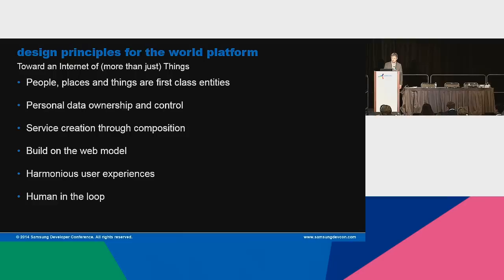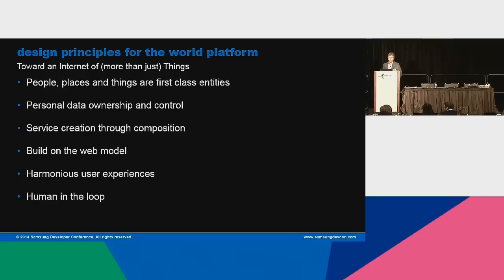So we need to think about some design principles. The first thing I'll assert is that people and places are just as important as things, if not more important. All three — people, places, and things — should be first-class entities when you're thinking about developing a system, and when thinking about how you interact with a system. Those are all players; those are all actors.